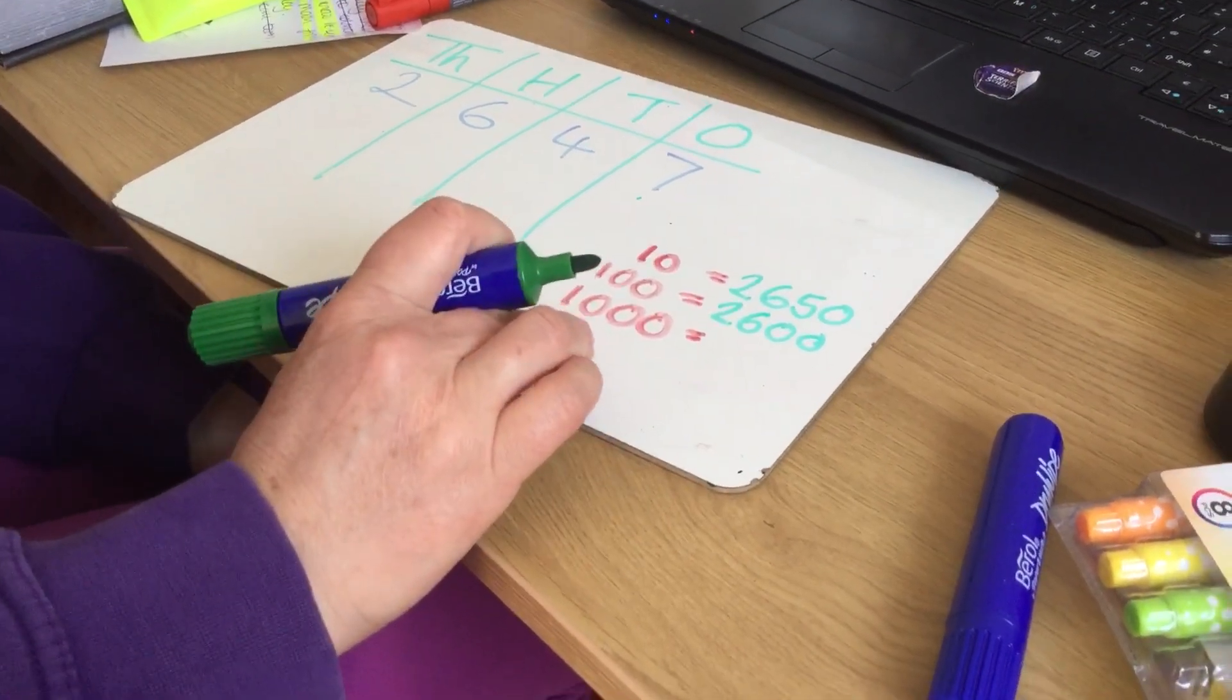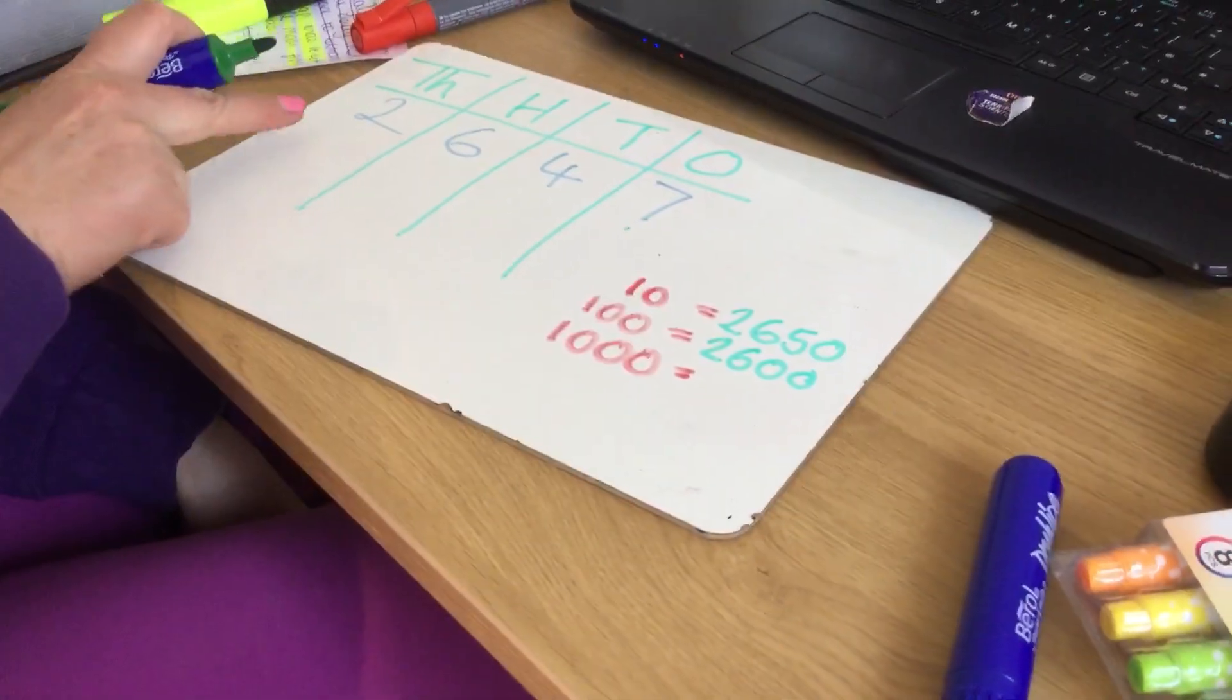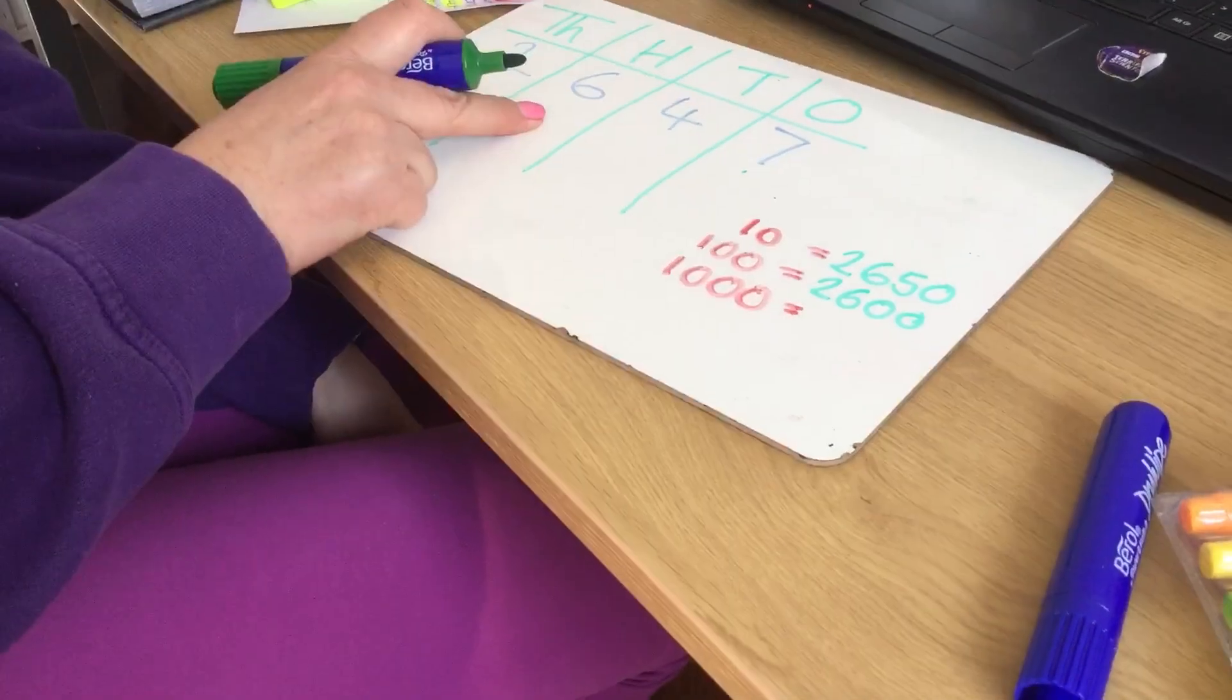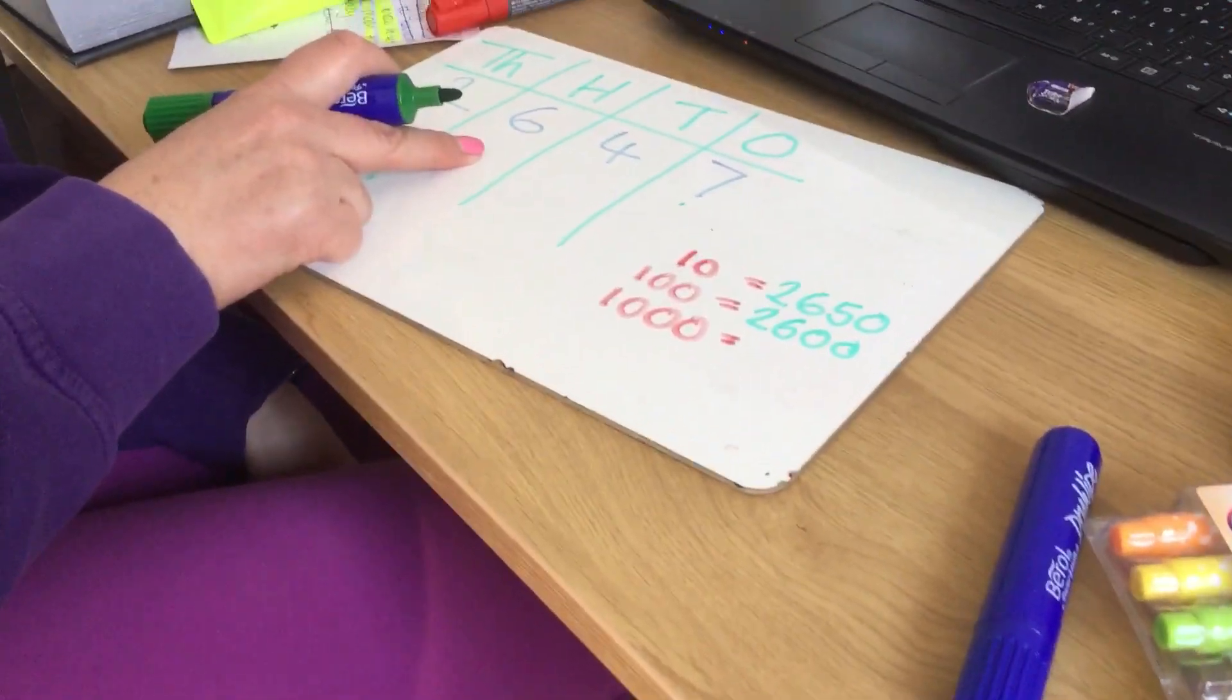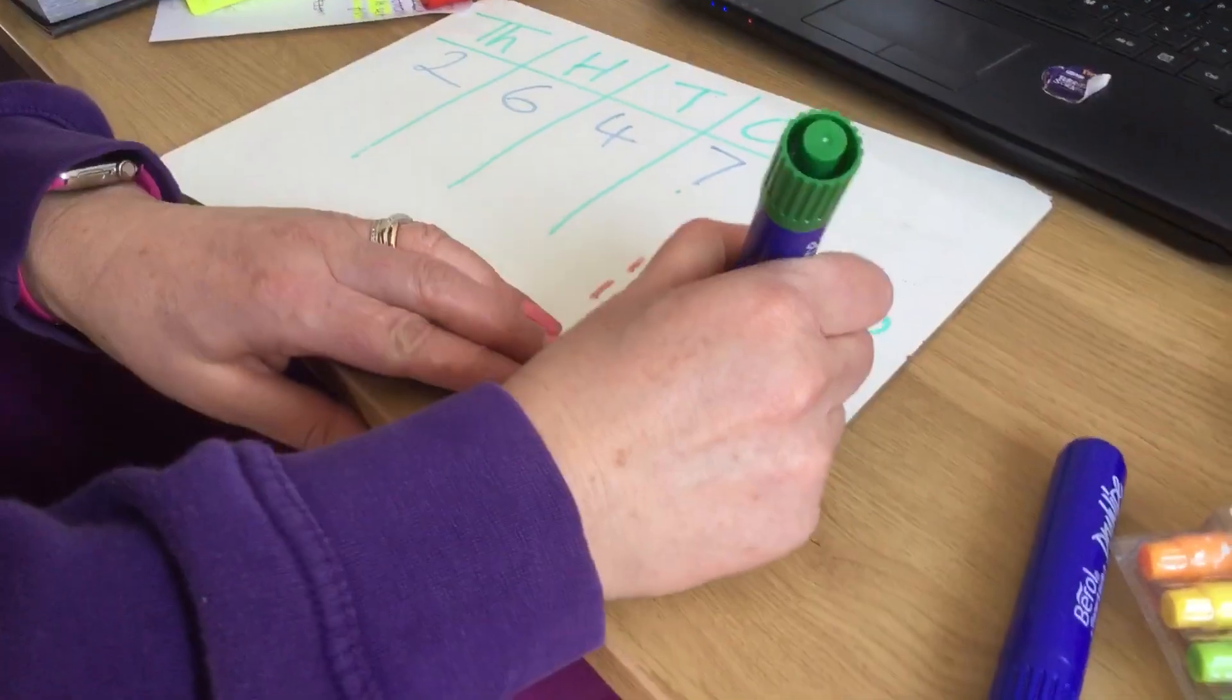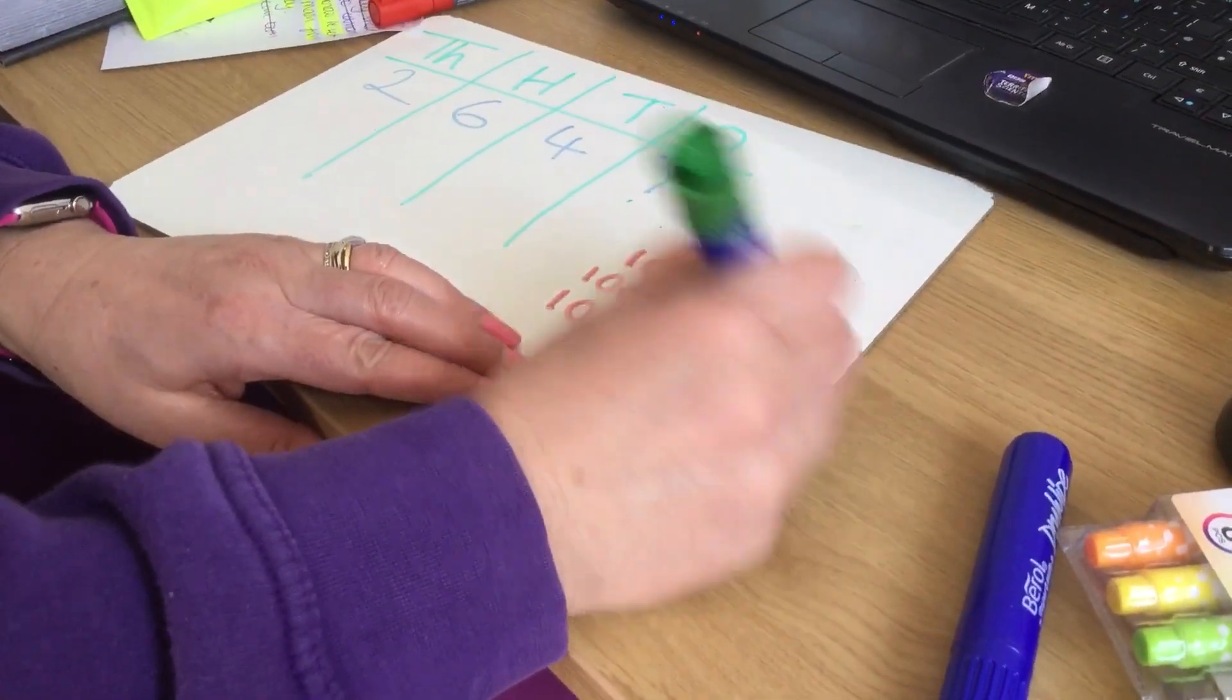Lastly, my thousands. If I'm rounding this number to the nearest thousand, I'm looking at my right-hand column, which is a six. It's in my hundreds column. Therefore we're rounding up. So 2,647 to the nearest thousand is 3,000.